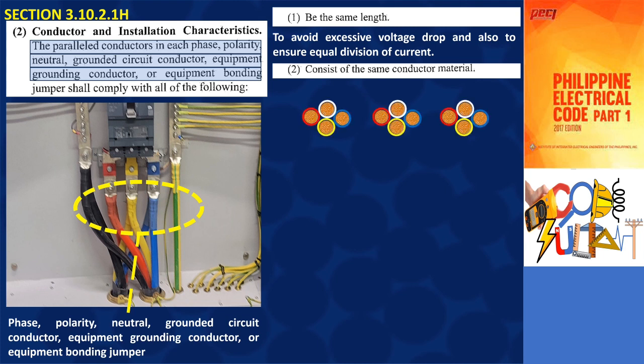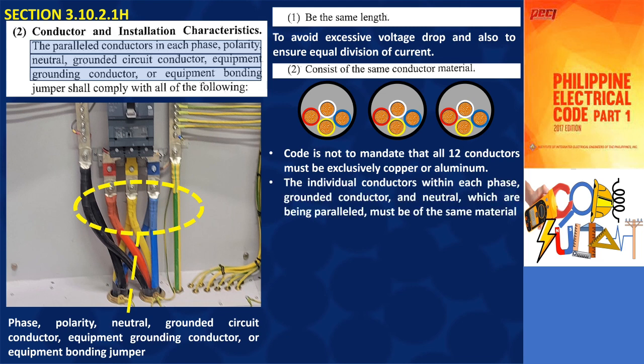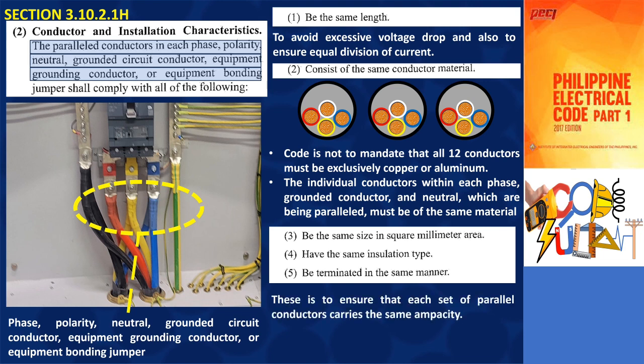To illustrate this, let's consider an example where 12 conductors are being paralleled for a three-phase, four-wire, 400Y/230V AC circuit. In this scenario, it is permissible to install four conductors in each of the three raceways. It's important to note that the code does not mandate that all 12 conductors must be exclusively copper or aluminum. However, the code does emphasize that the individual conductors within each phase, grounded conductor, and neutral which are being paralleled must be of the same material, the same square millimeters area, insulation type, and be terminated in the same manner. Following all these rules ensures that each set of parallel conductors carries the same ampacity.